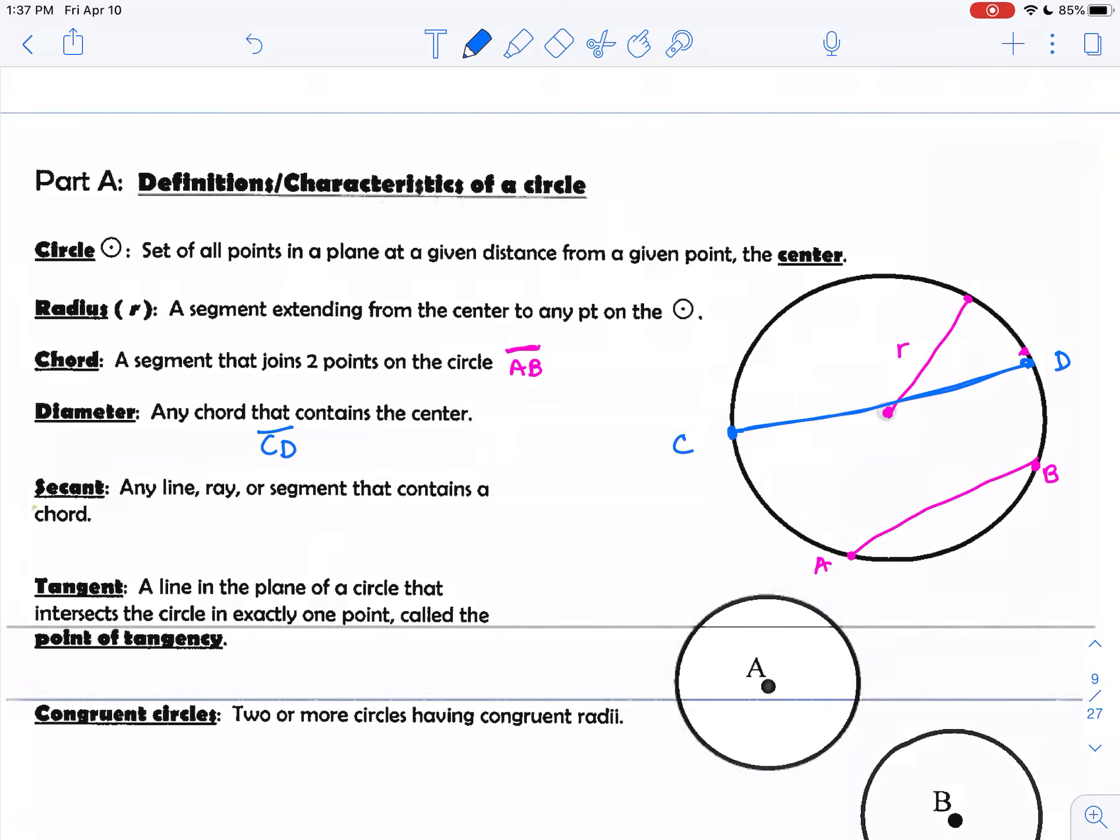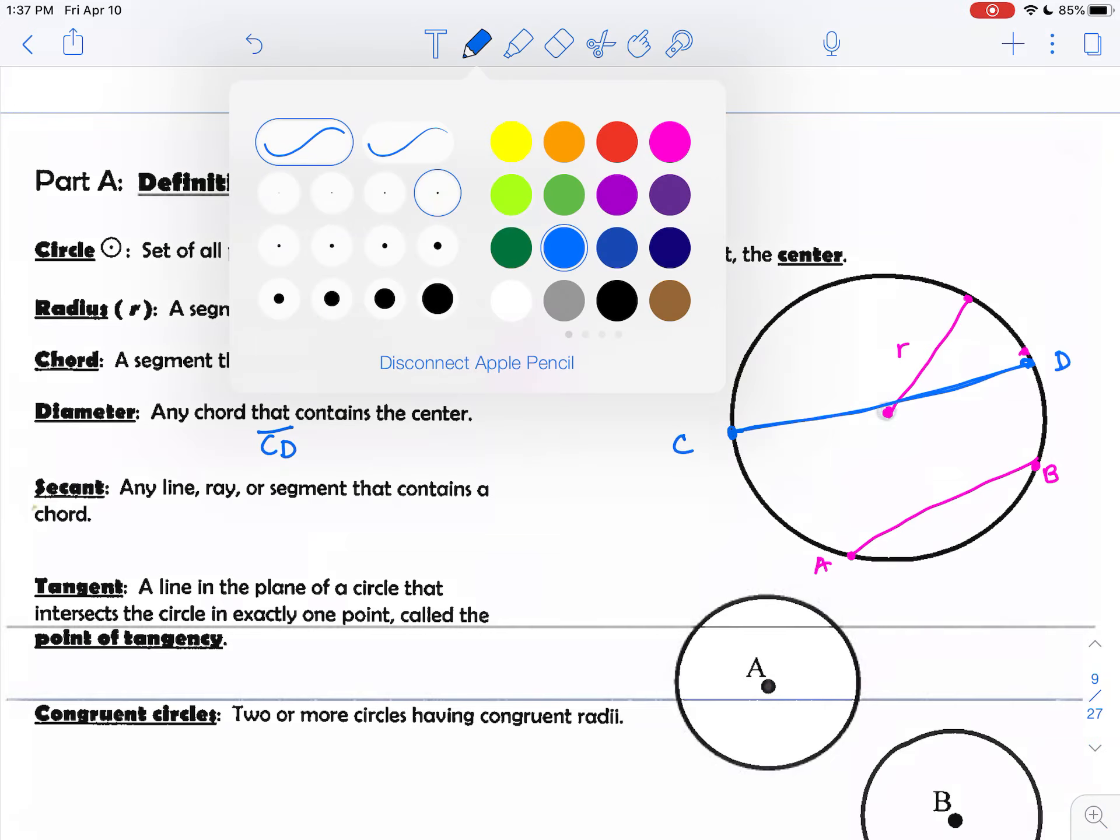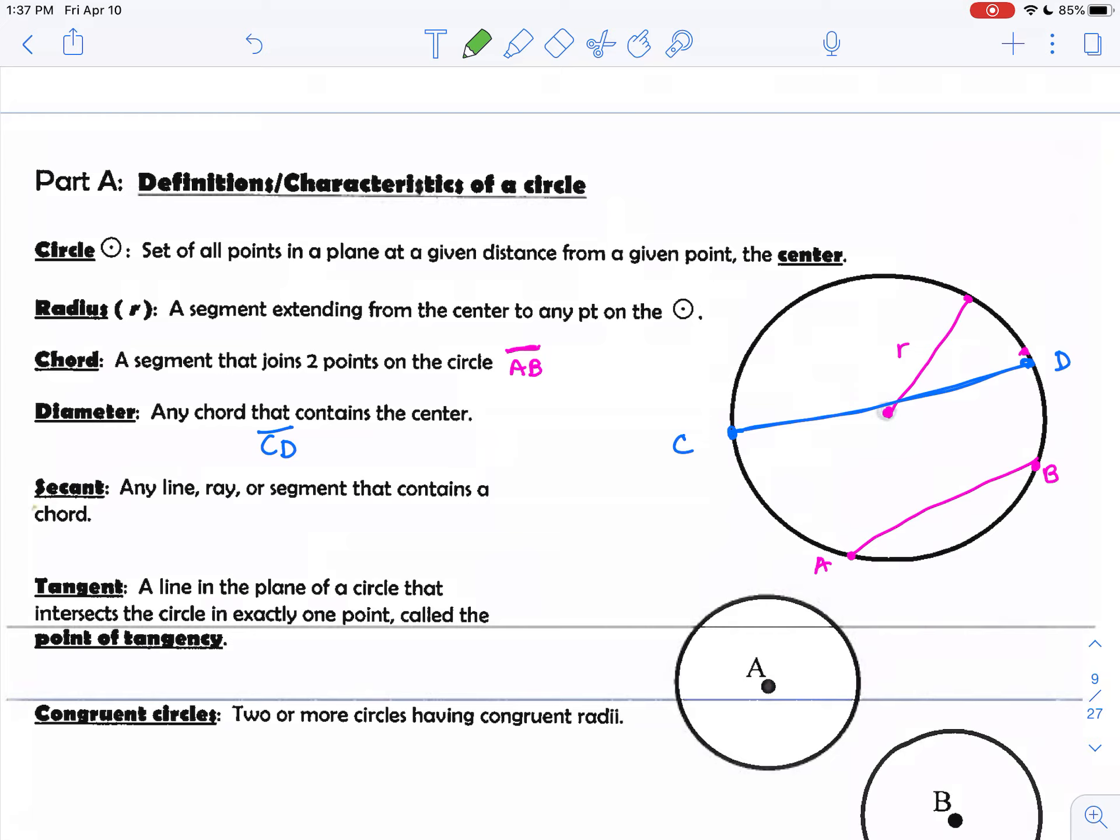Any line or ray or segment that contains a chord is called a secant. It's important to note that a secant is a line, ray, or segment. If I just connected these two points right here, that would be called a chord. But if I extended that line further out, past to infinity and negative infinity in this case, then that's called a secant line. So let's call that line L. Line L is a secant line.